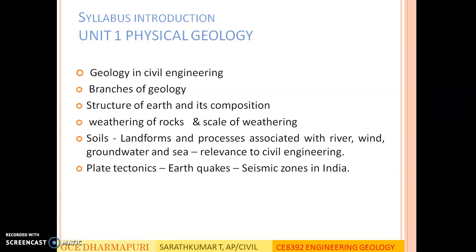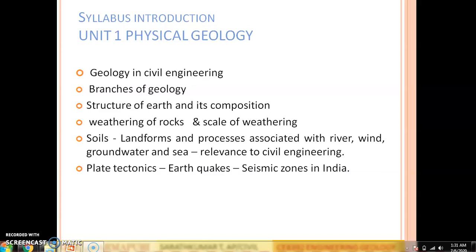In Unit 1, we will be studying geology in civil engineering, branches of geology, structure of the Earth and its composition, weathering of rocks and scale of weathering, soils, landforms and processes associated with various natural agents like river, wind, ground water, and sea, and their relevance to civil engineering. Finally, we will be studying about plate tectonics, earthquakes and seismic zones in India. In general, Physical Geology deals with the structure of the Earth, its composition, and how the Earth is continuously modified over a period of time by various agents like river, wind, ground water, and sea.